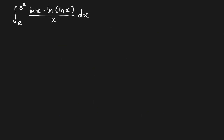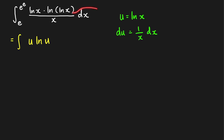Next problem. Before trying other techniques, the rule of thumb is to try substitution first. Looking at this integrand, we try u equal to ln(x). Then du equals 1/x dx. We rewrite the integral as the integral of u·ln(u) du, with limits: when x equals e, u equals 1; when x equals e^e, u equals e.